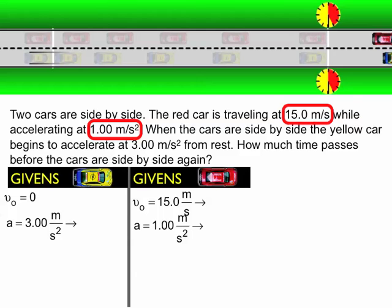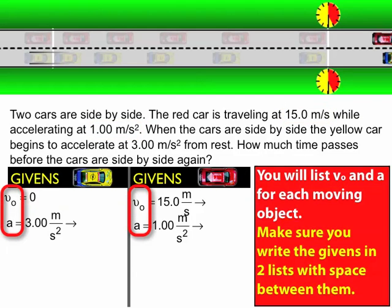For each one of these cars, I have a velocity and I have an acceleration. That's going to be true whenever we're doing these kinds of problems. They're always going to have a velocity and acceleration. If the problem says one of the cars is moving at a constant velocity, that means that the acceleration is 0. It doesn't mean it's not there, it just means that the acceleration is 0 whenever it says constant velocity.